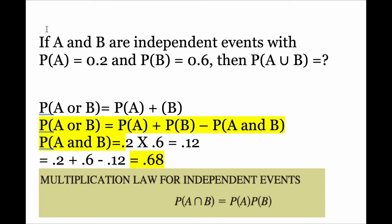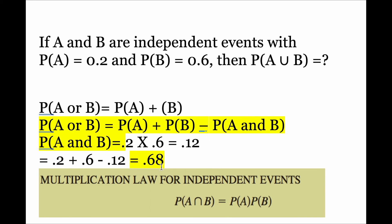Just to recap: we had a question stating that A and B are independent events with probability of A equal to 0.2 and probability of B equal to 0.6, and we needed to find probability of A or B occurring. We looked at the rule of addition — we could not use the first formula since it's only for mutually exclusive dependent events. So we first found probability of A and B using the multiplication law for independent events, then plugged those values into the second formula to find that the probability of A or B occurring is 0.68.